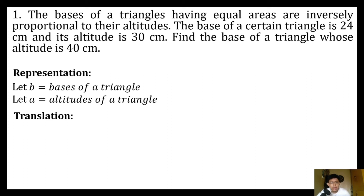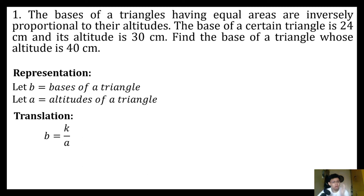Now let's translate the first sentence. Knowing that the bases of a triangle having equal areas are inversely proportional to their altitude, since we use the phrase 'inversely proportional,' this is a case of inverse variation. So in this case we will have an equation: b, the base of a triangle, is equal to the constant of variation divided by our altitude.